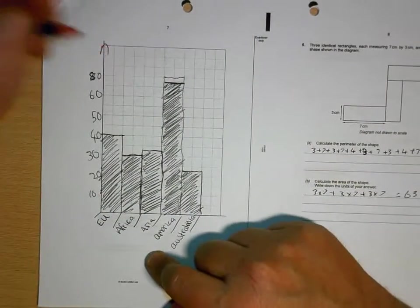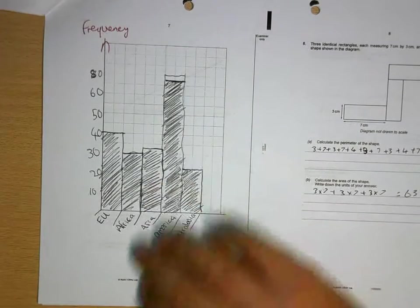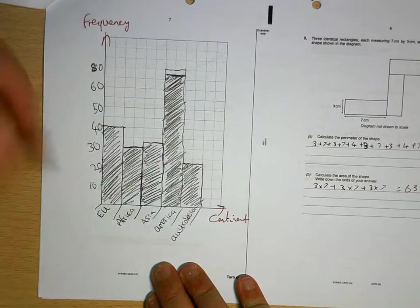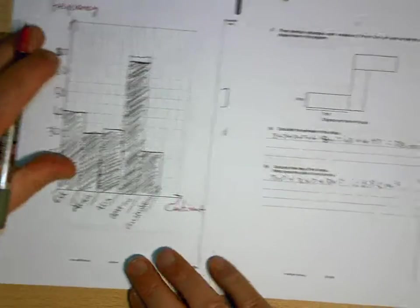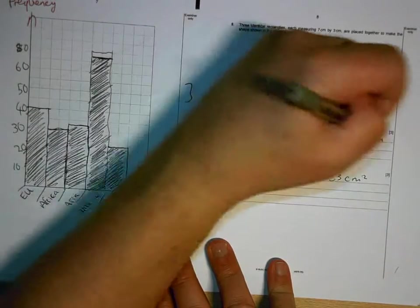With this one, you have to label it. That's your frequency column. That's your continent column. You lose a mark for that. 38 is wrong. You've got a 4 in there.